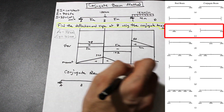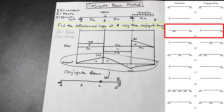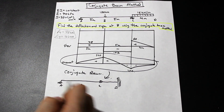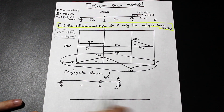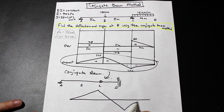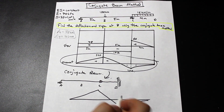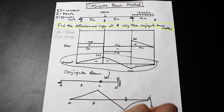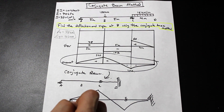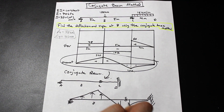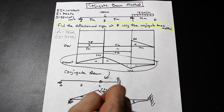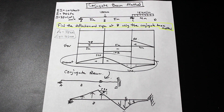Now we're going to take our moment diagram and place it onto the conjugate beam as a loading. The loading goes up in one region and down in another. That is the M/EI diagram — we'll write the values in.